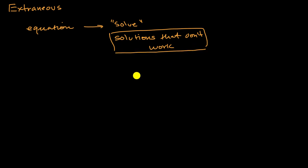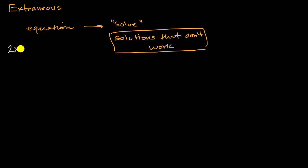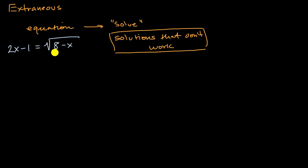What we're going to do in this video is get a little bit deeper. We're going to look at some extraneous solutions, but really think deeply about why they show up. So let's give an example — hopefully one you're familiar with — when dealing with radical equations. Let's say you're trying to solve 2x minus one is equal to the square root of eight minus x. We're going to really study why we get an extraneous solution here.